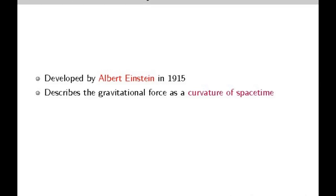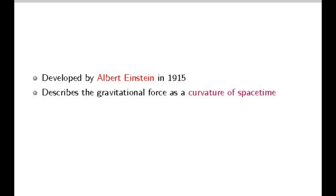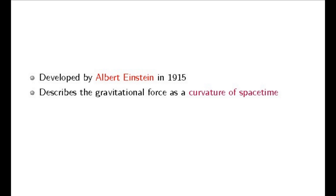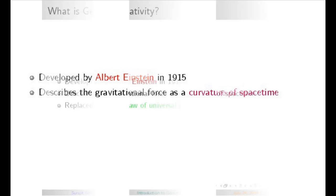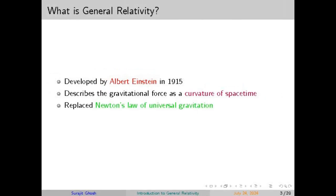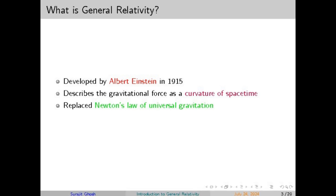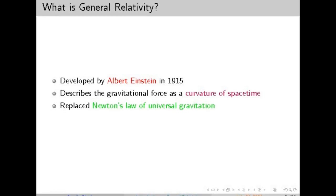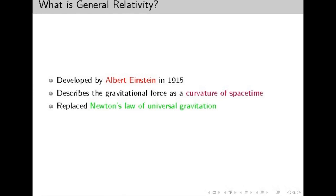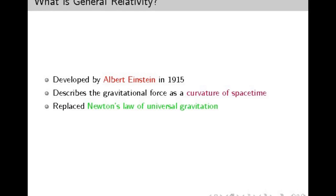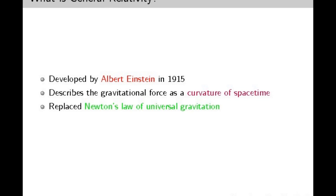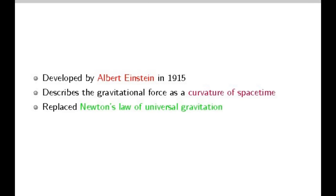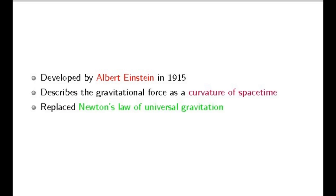Now let's talk about the mathematical foundation of general relativity. The theory uses a branch of mathematics called tensor calculus, which helps describe the curvature of space-time. Imagine space-time as a stretchy fabric — when you place a heavy object like a ball on this fabric, it creates a dip, and smaller objects placed nearby will roll towards the heavier object, not because they are being pulled by a force, but because they are following the curved path created by the dip. Objects move along the curves in space-time created by mass and energy.